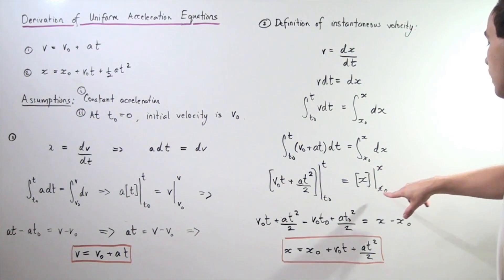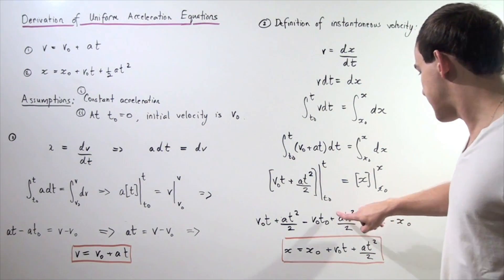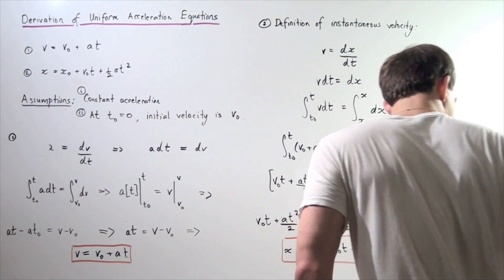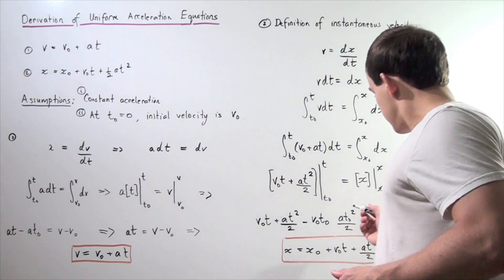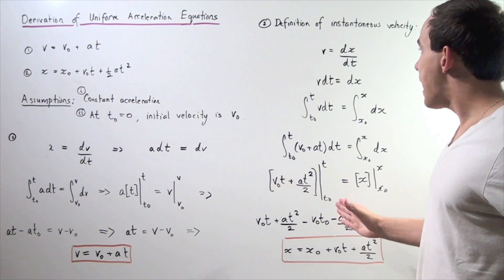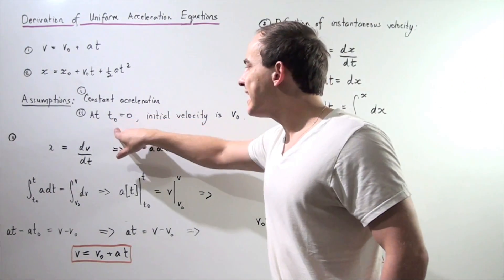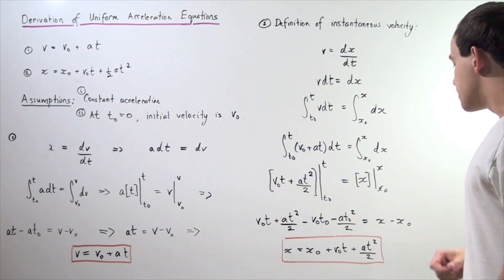t final and our x-naught and x final and we get the following result. Now, this actually should be a minus, let's make it a minus. Okay, now from our assumption, our t-naught is 0 so any term that has t-naught will cancel out.